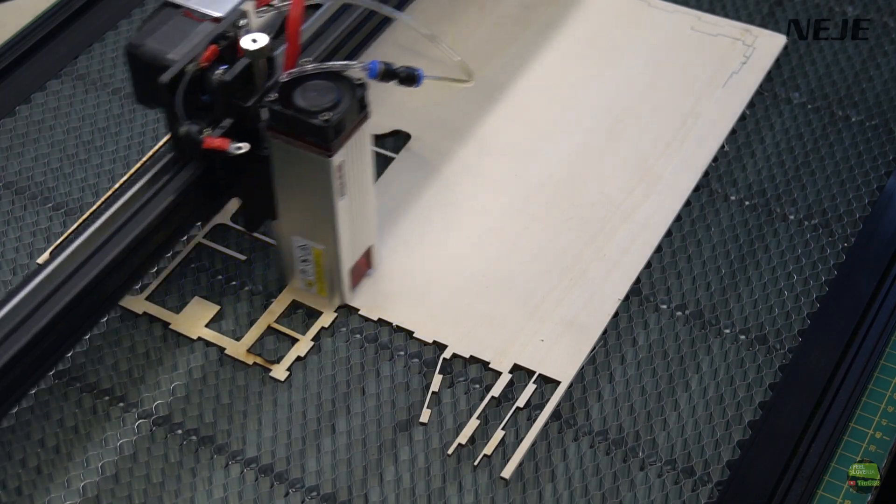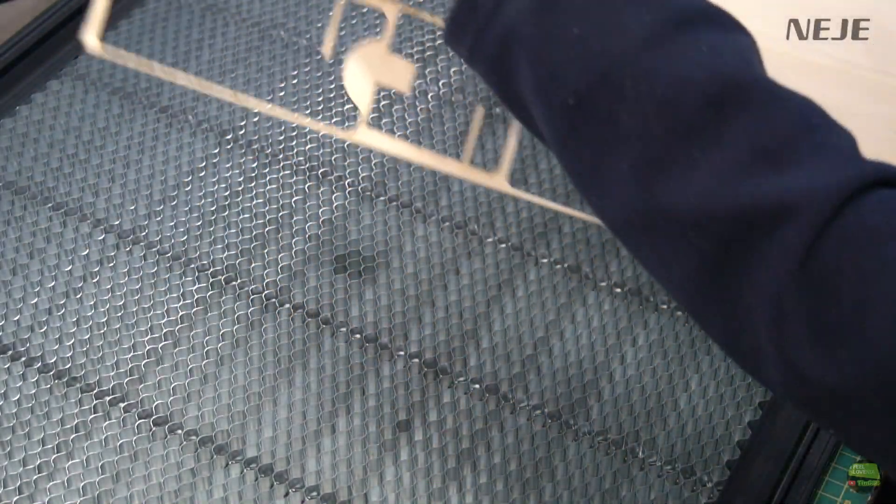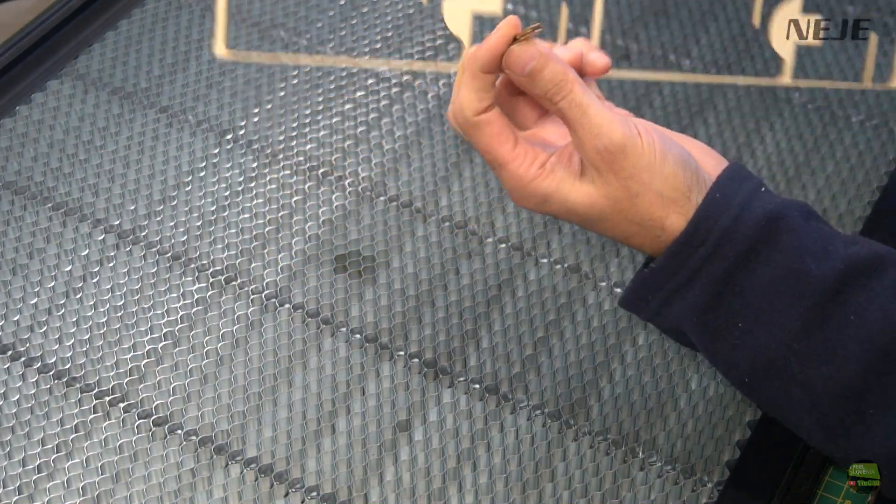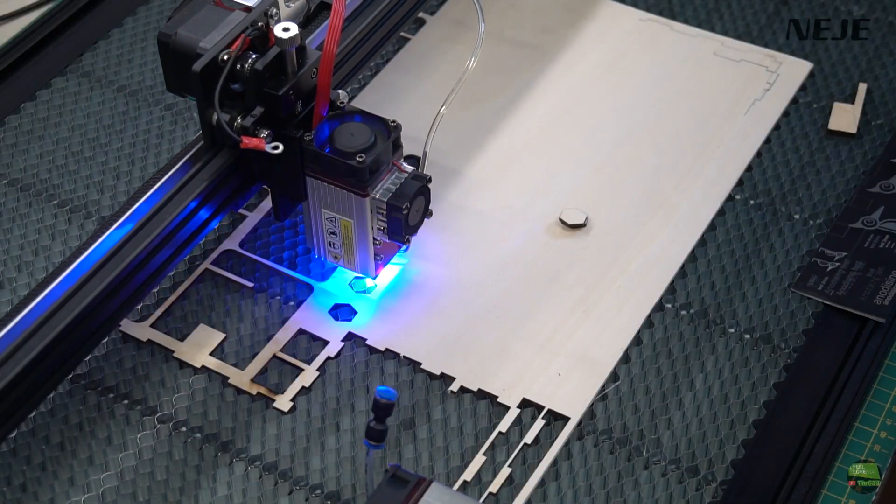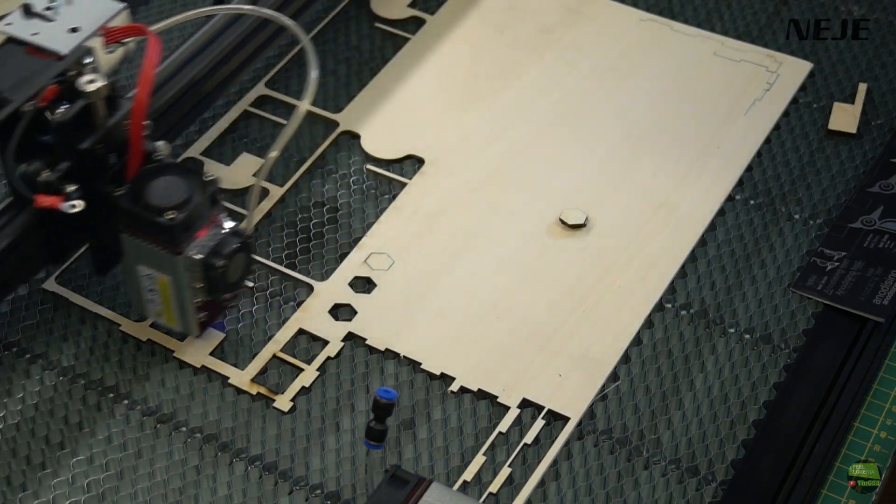It cut nicely in a single pass so I tried with same settings just speeded up to 10mm per second. It cut through but there were still some points holding the piece together. Then I changed the model to A4640 which made a perfect cut also with 10mm per second speed.